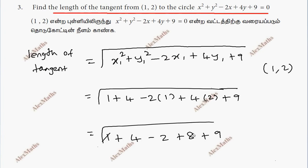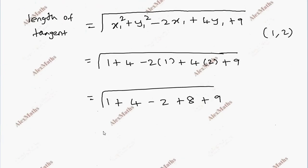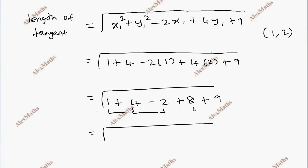So the total: 1 plus 4 is 5, minus 2 gives 3, plus 17, total is 20. So the length of the tangent is root 20 units.